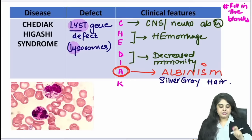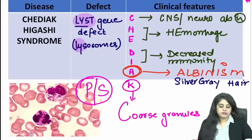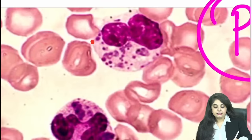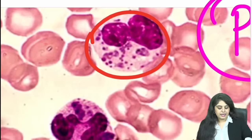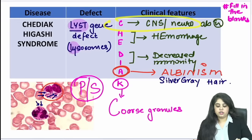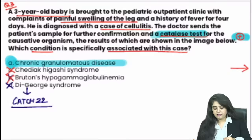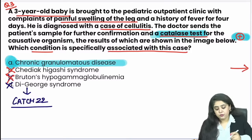K (same sound as C): coarse granules. On peripheral smear, the image shows white blood cells — neutrophils — with big blue-coloured coarse granules inside them. This is the classic peripheral smear picture of Chediak-Higashi. So in the question: neurological problem, bleeding problem, infection problem, silvery grey hair, and coarse granules. None of these were mentioned in our question, so Chediak-Higashi was ruled out.